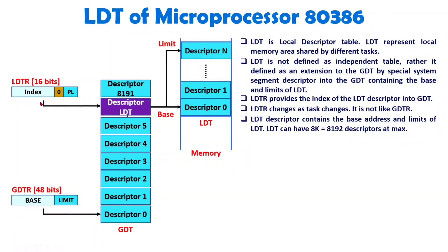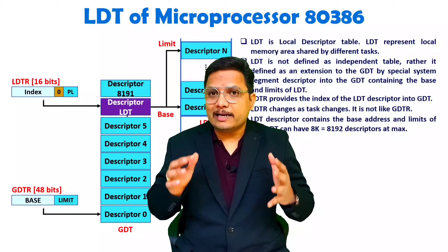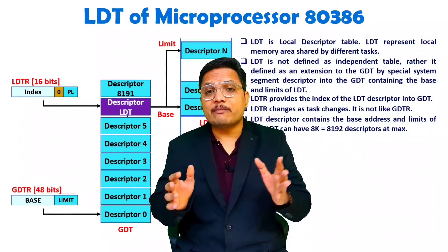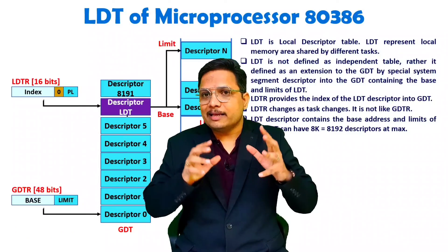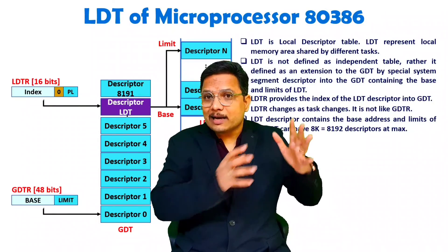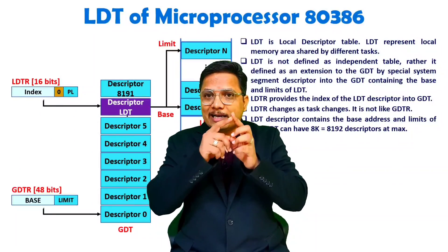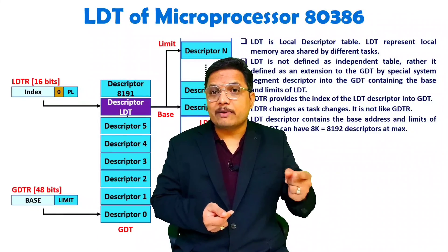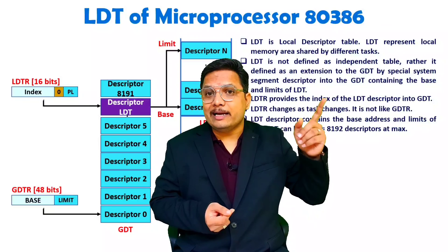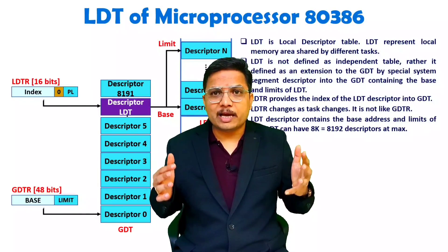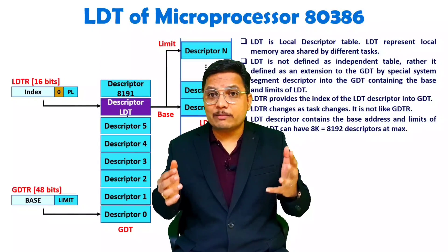You should know that the LDTR changes with respect to task, so it is not fixed. This is how the LDT works with Microprocessor 80386. LDT is indicated by the LDTR register, but LDT is not directly usable — it is specified by the LDT descriptor inside the GDT, and that LDT descriptor is selected by the LDTR register. The LDTR changes with respect to task. When we talk about the GDT, it has a fixed memory space area and does not change with respect to task. But for LDT, the LDTR tracks the descriptor inside the GDT, which is why it changes with respect to different tasks. I hope that is clear. If you have any queries, just post them in the comment box — I will be happy to help. Thank you so much for watching this video.